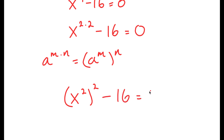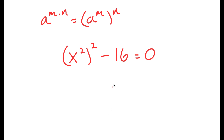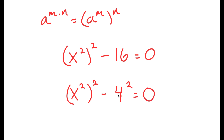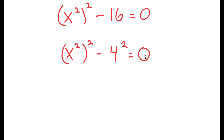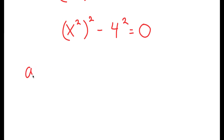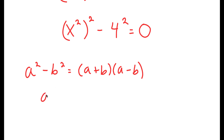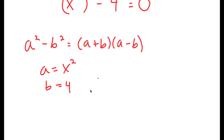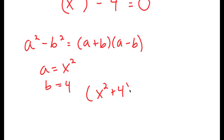And I have this minus 16 is equal to 0. From here, I'm going to rewrite 16 as 4 squared. So I have x to the power of 2 to the power of 2 minus 4 squared is equal to 0. And if I have something in the form a squared minus b squared, this is equal to a plus b times a minus b. In this case, a is x squared and b is 4. So this turns out to x squared plus 4 times x squared minus 4 is equal to 0.